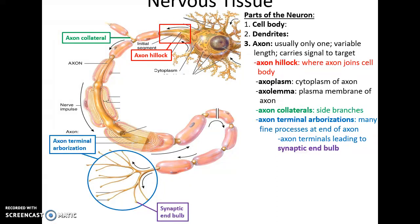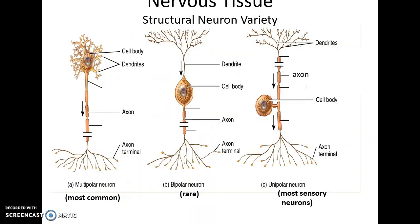The cytoplasm of the axon is called axoplasm, while the plasma membrane of the axon is called the axolemma. Occasionally there are axon collaterals — side branches going to other areas — but usually an axon is one long structure that branches into much smaller structures at its terminus. This branching area is the axon terminal arborization, ending in many fine processes that synapse with various cells. At the very ends of these terminals is a widened area called the synaptic end bulb, important for the synapse.